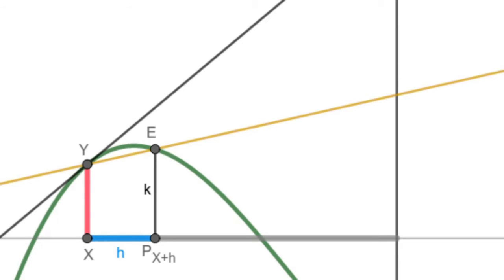One of the issues that we're interested in is finding the slope of a function at a particular point. So here at this point that's labeled Y, we'll be interested in finding the slope of this line.